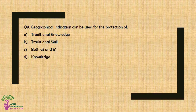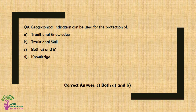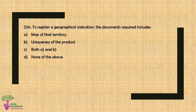Question No. 9: Geographical Indication can be used for the protection of — Option A: Traditional Knowledge, Option B: Traditional Skill. The correct answer is Option C — Both Traditional Knowledge and Traditional Skill.